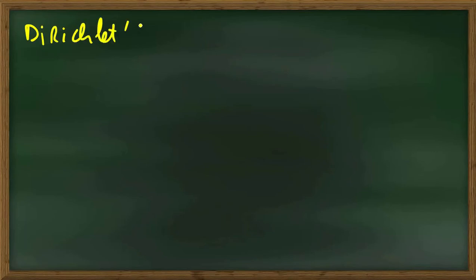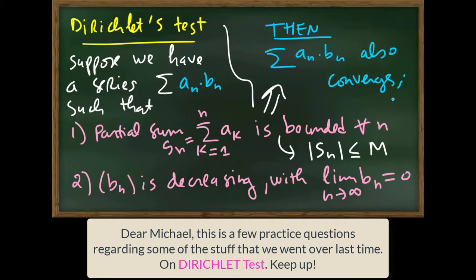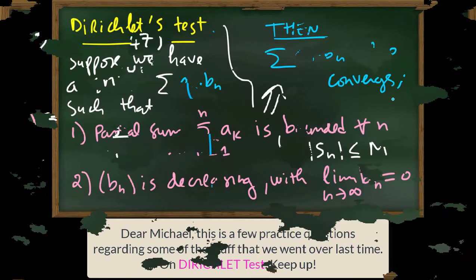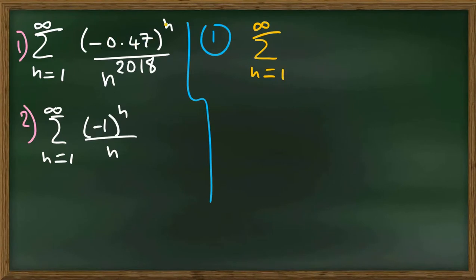Now, let's talk about Dirichlet's test. Minus 0.47 to the power n is a geometric sequence, and we know how to deal with geometric sequences. So I'll call this a_n.